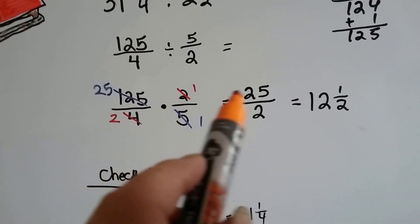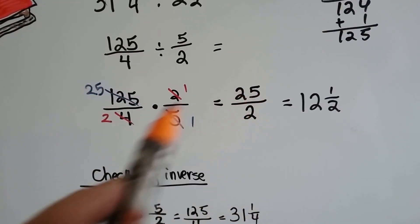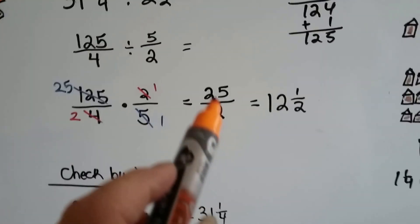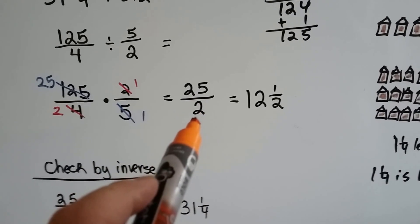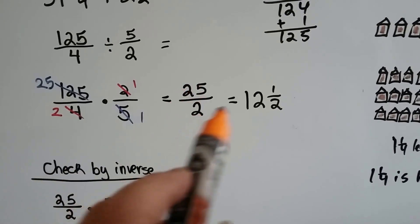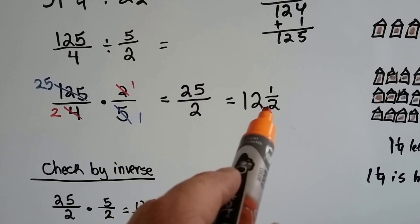Now we multiply across and we get twenty-five over two. When we reduce it to its lowest terms, two goes into twenty-five twelve times with a half left over.